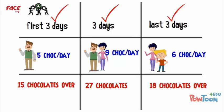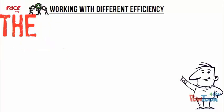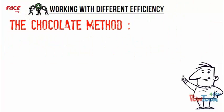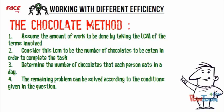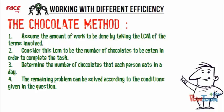That wasn't so difficult, was it? This method is called the chocolate method and can be used to solve any problem in time and work. To summarize the 4 steps: 1. Assume the amount of work to be done by taking the LCM of the terms involved. 2. Consider this LCM to be the number of chocolates to be eaten to complete the task. 3. Determine the number of chocolates each person eats in a day. 4. Solve the remaining problem according to the conditions given in the question.